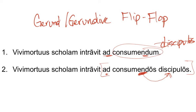They took the word that would have been accusative — the accusative plural direct object of ad consummendom — kept discipulos, and then used a gerundive to modify it, matching in the same case, number, and gender. That's why consummendos goes like that: we change from the singular accusative gerund to the masculine accusative plural gerundive modifying discipulos.